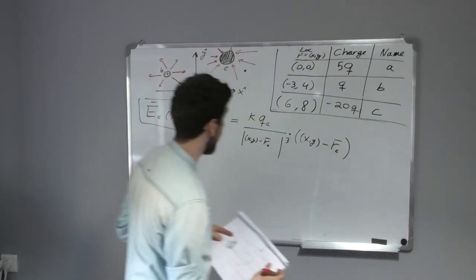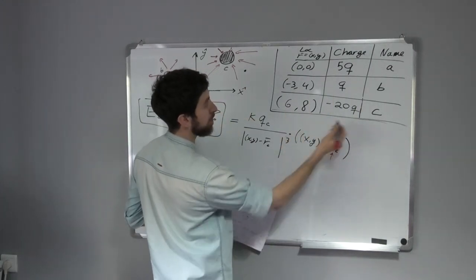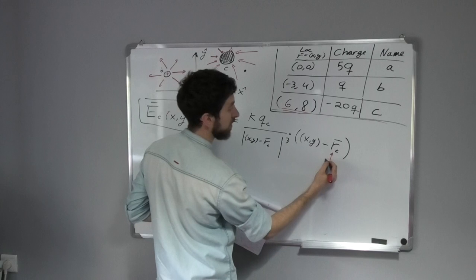So instead of r_C, what we're going to put inside, it's going to be this value, right? Six...